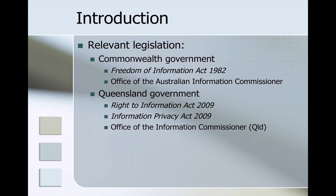The Parliament also intends that information held by the government is to be managed for public purposes and is a national resource, and that this will facilitate and promote public access to information promptly and at the lowest possible cost. That comes from the Commonwealth Act, but there are similar provisions in the Queensland legislation — the Right to Information Act and the Information Privacy Act, together with the Office of the Information Commissioner. We're going to focus mainly on the Commonwealth legislation, using it as a case study.